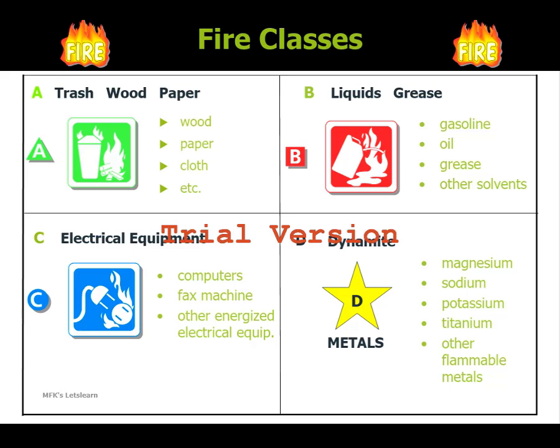Class A — 'A' stands for ash, meaning anything that burns and gives out pure ash. Examples are wood, paper, cloth, etc. To suppress these fires, we usually use water.